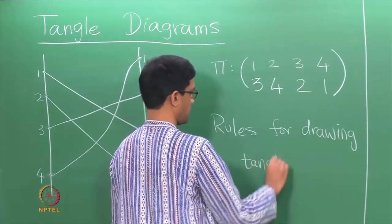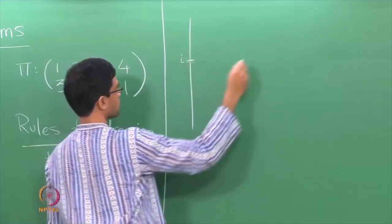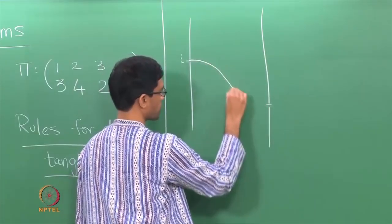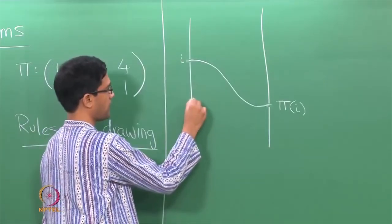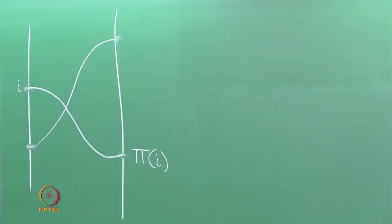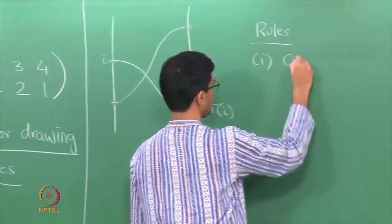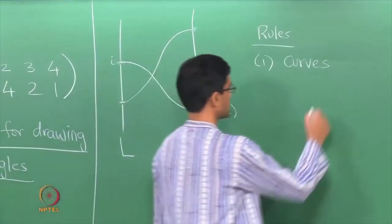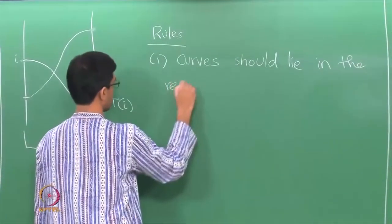This is sometimes called a tangle diagram. So what are the rules for drawing tangles? The primary thing is: for each i, if you want to represent a permutation, you draw a curve which joins i and its image under the permutation, pi of i. You pick each value of i and join it to whatever it maps to. It is nothing but a bunch of curves drawn between these lines. For a start, these curves should lie between the 2 lines L and L'. What we want is the curves should lie in the region between these lines.